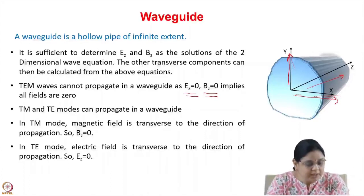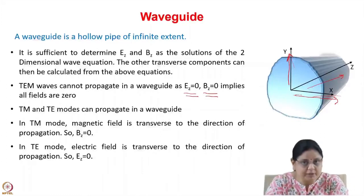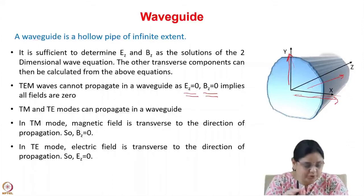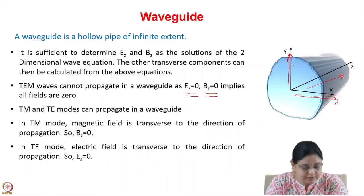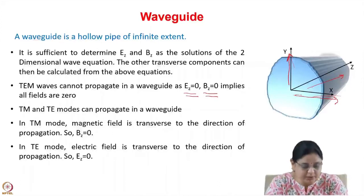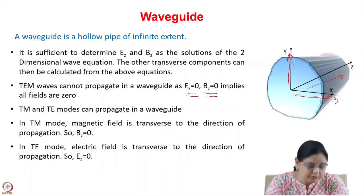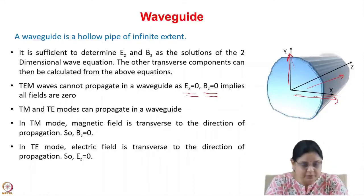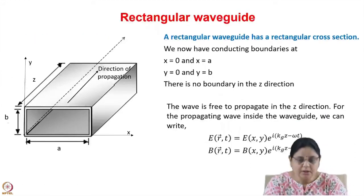Only TM and TE modes will propagate in the waveguide. In a TM mode, the magnetic field is transverse to the direction of propagation, so Bz = 0, and the magnetic field exists only in the x or y direction. In TE mode, the electric field is transverse, so Ez = 0, and Ex and Ey components will exist. One of either Ez or Bz must definitely exist, otherwise all fields go to zero.